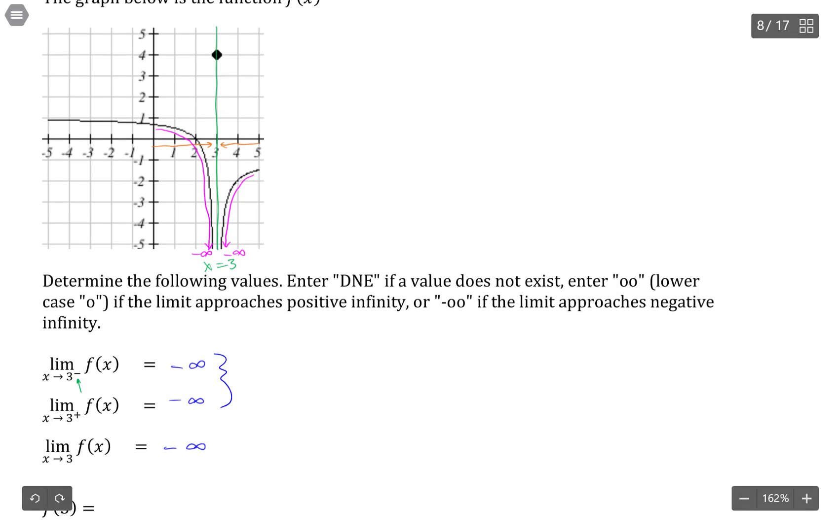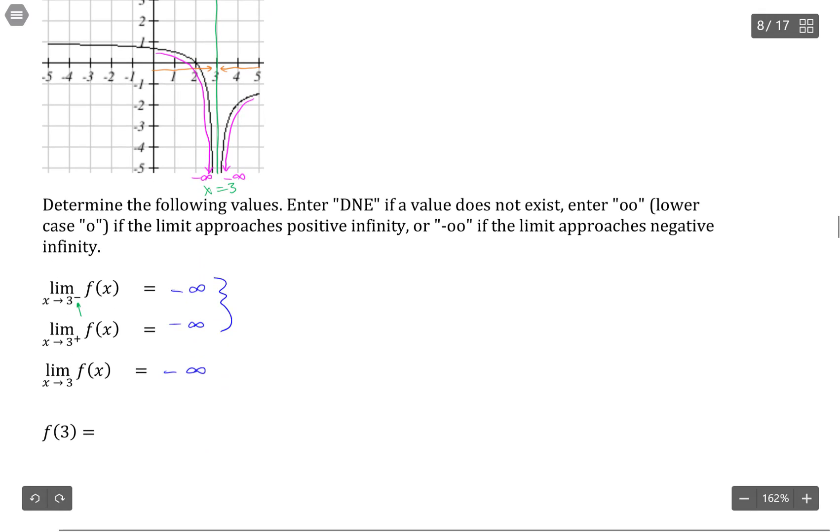f of 3? Well, f of 3 is asking where is the function defined at 3. The function is defined here at this particular point, which is at 3 and then 4 on the y. So the value of f of 3 is 4. See you next time, take care.